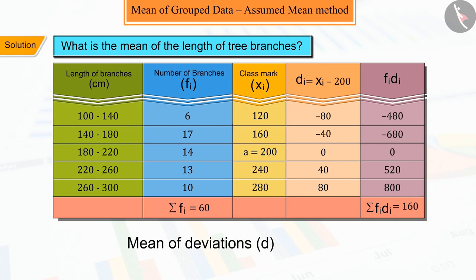Correct. To find the mean of the deviations, the sum of the product of fi di is divided by fi.